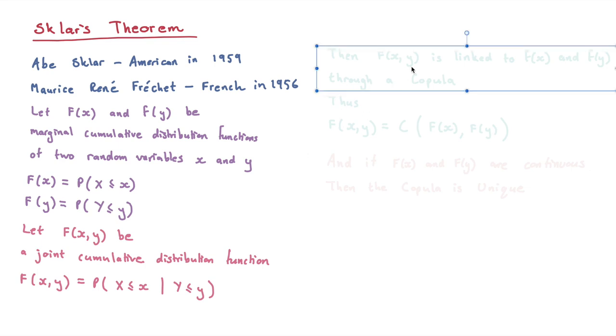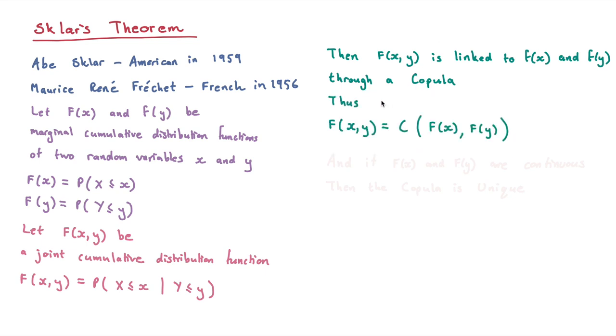And then here comes the magic. It says, then F(x,y) is linked to F(x) and F(y) through a copula, or the joint distribution is linked to the marginal distributions through a copula, and thus we get this basic formula or this framework for the copulas, which says the F(x,y) is equal to this copula function, which is taking two marginal distributions as its input.